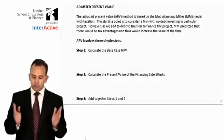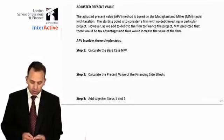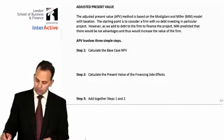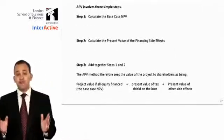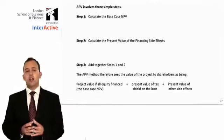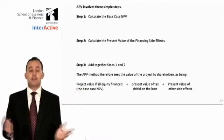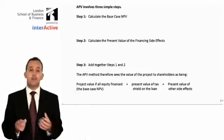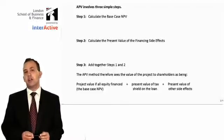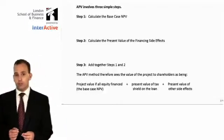The three basic steps: step one, calculate the base case NPV; step two, calculate the present value of the financing side effects; and step three, simply add together steps one and two. Even if you're really struggling on step one or step two, make up a figure for each, and as long as you add them together in step three, you've shown a level of understanding and you will get some credit. You must get to the end, because step three is without a doubt the easiest of the three steps.